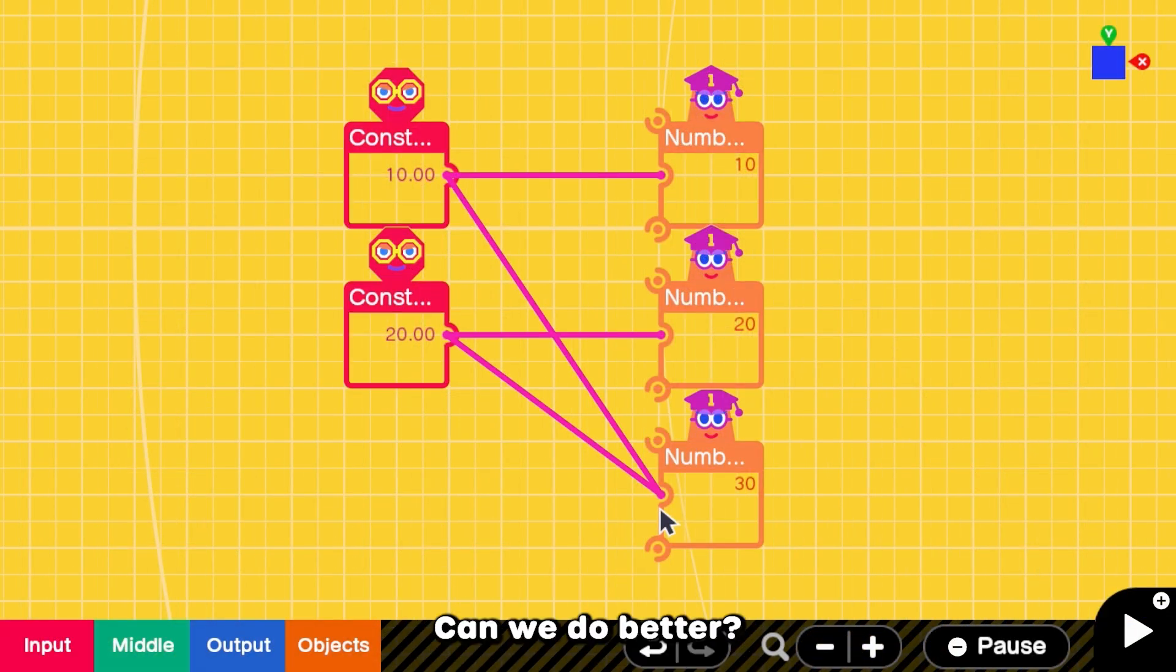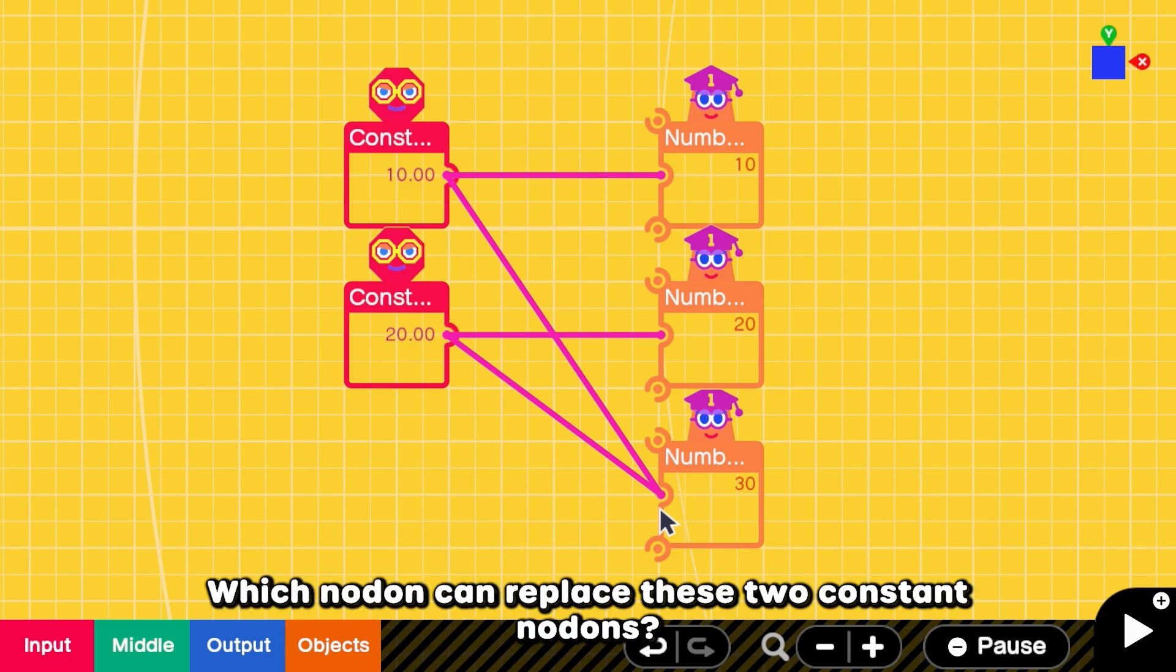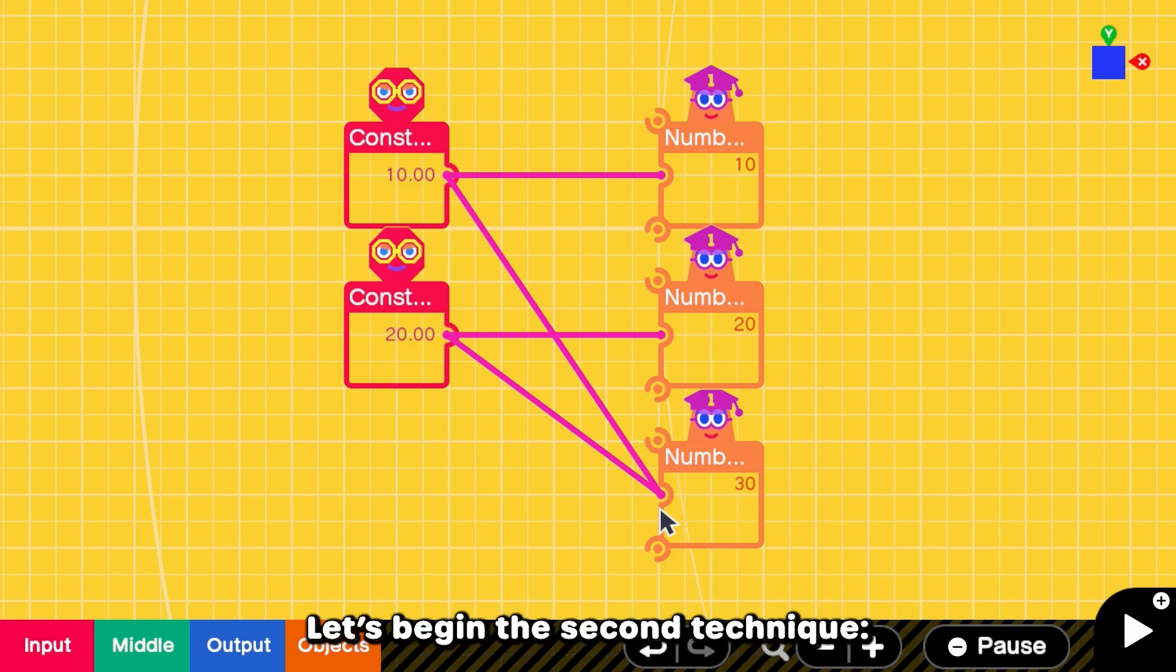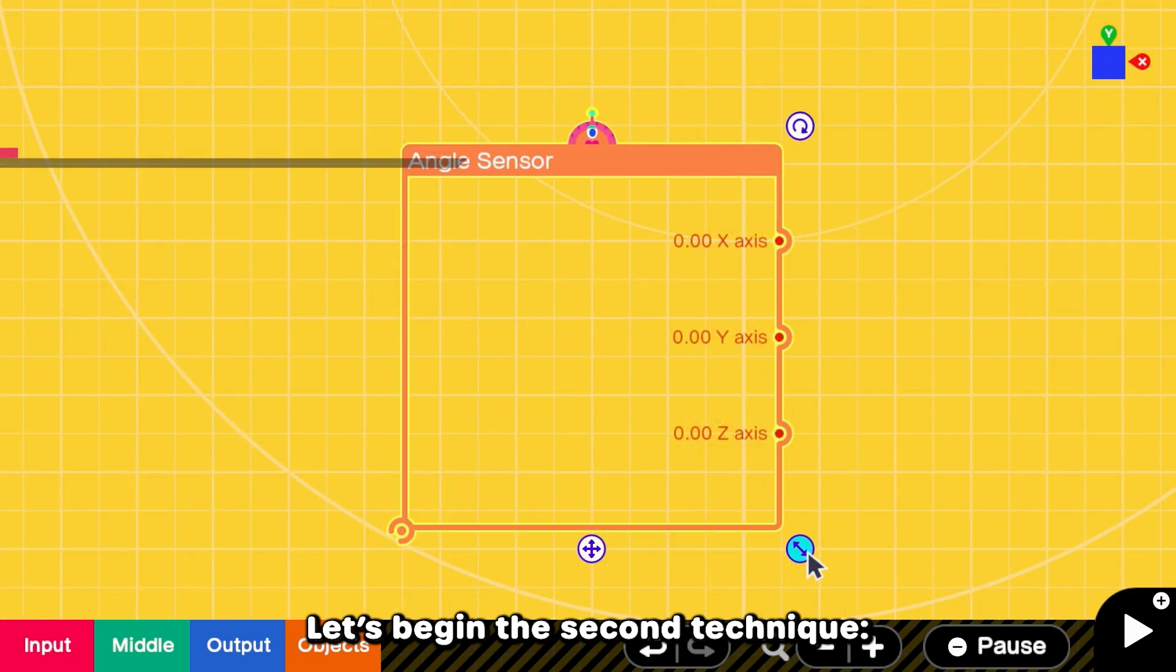But can we do better? Which nodon can replace these two constant nodons? Let's begin the second technique, use angle sensor nodon.